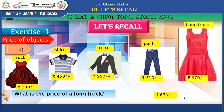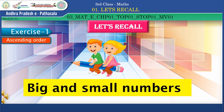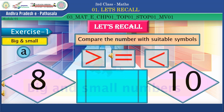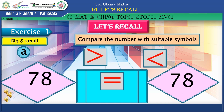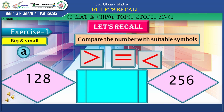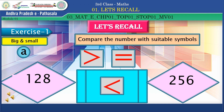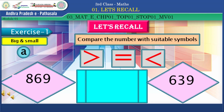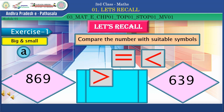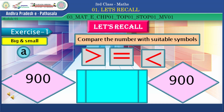Next activity: big and small numbers. Compare the numbers with suitable symbols — bigger, smaller, or equal. 78 and 78 — equal to is the suitable symbol. 128 and 256 — less than is the suitable symbol. 869 and 639 — greater than is the suitable symbol. 900 and 900 — equal to is the suitable symbol.